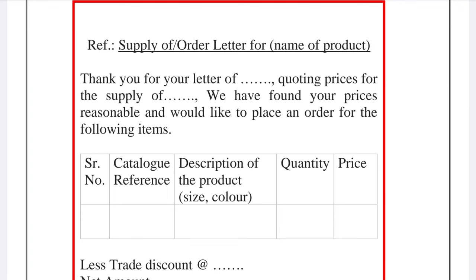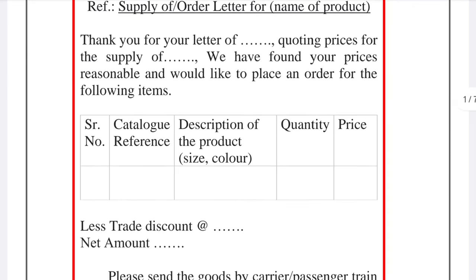You can write the name of the product related to the exam letter. The first paragraph begins with the reference: 'Thank you for your letter of...' — you write the date of the quotation letter — 'quoting price for the supply of...' and then write the name of the product. Then you write: 'We have found your price is reasonable and would like to place an order for the following items.'